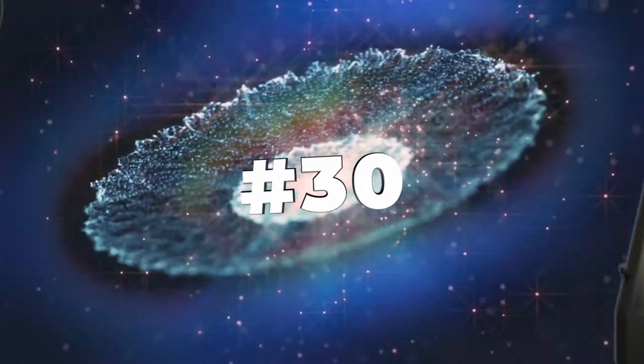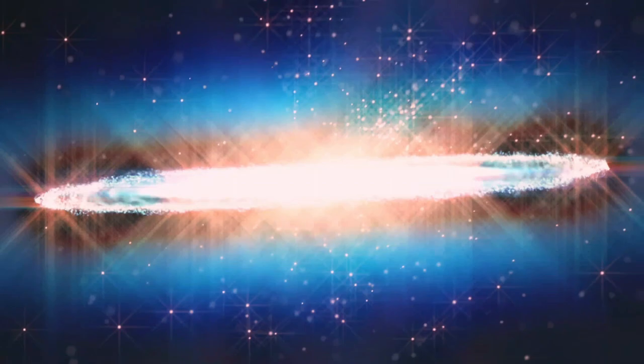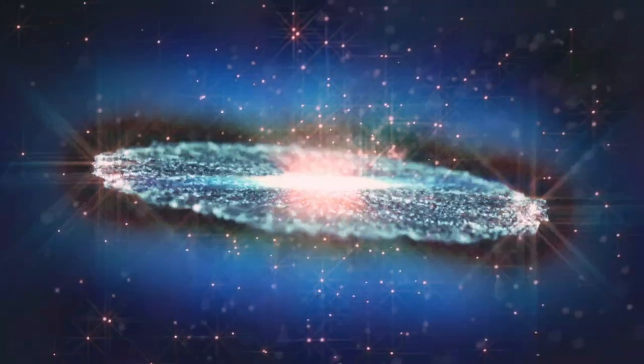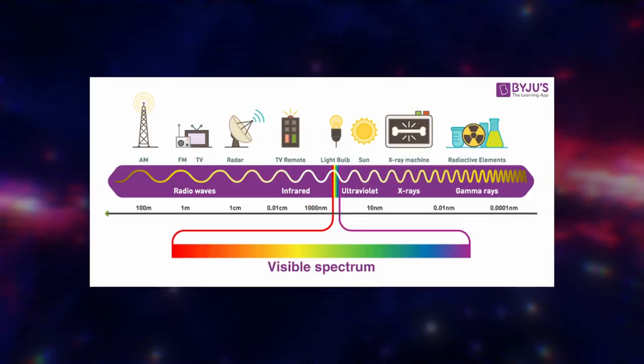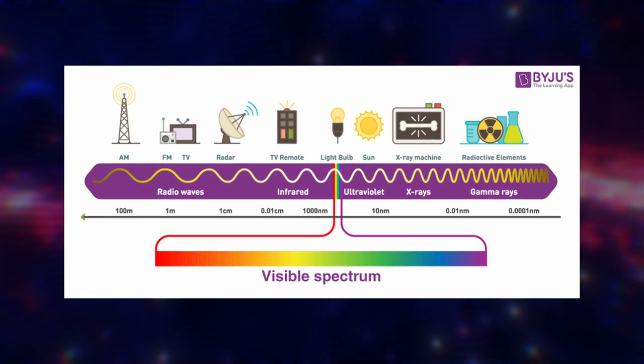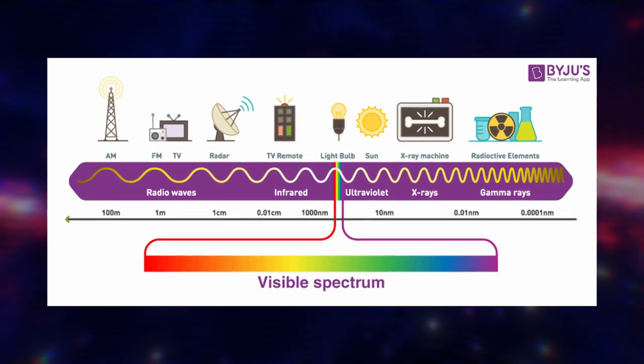Number 30. Light encompasses a wide range of wavelengths and frequencies known as the electromagnetic spectrum. It includes visible light, which humans can perceive, as well as other forms such as radio waves, microwaves, infrared, ultraviolet, X-rays, and gamma rays.